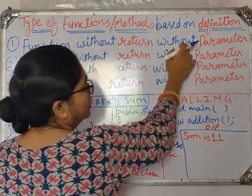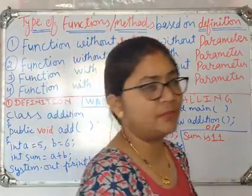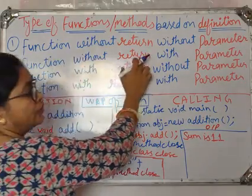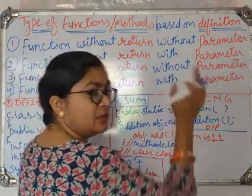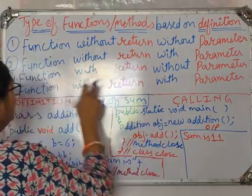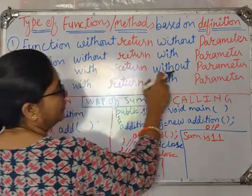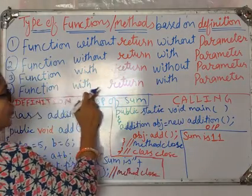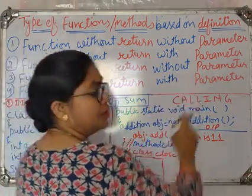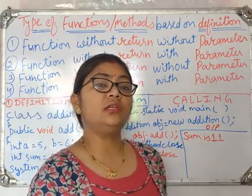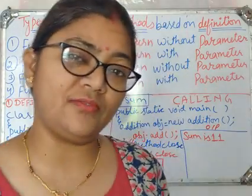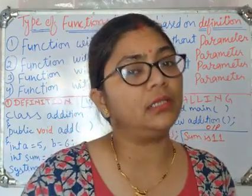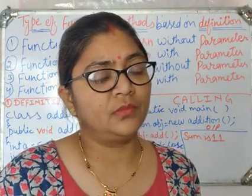The four categories are: first, function without return and without parameters; second, function without return with parameters; third, function with return without parameters; and fourth, function with return with parameters.